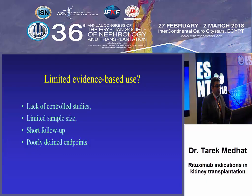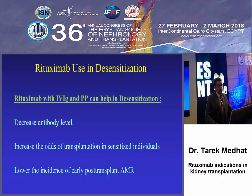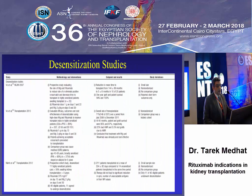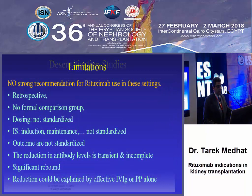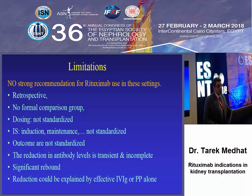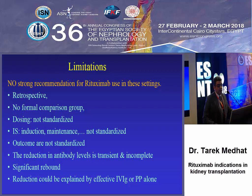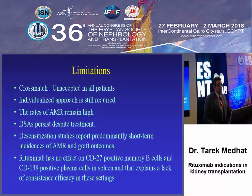Regarding desensitization, rituximab is used with IVIG and plasmapheresis to decrease antibody levels, with increased cost of transplantation in sensitized individuals and lower incidence of early rejection. However, the evidence still needs more study, as there are limitations including retrospective design, no formal comparison, non-standardized dosing, and non-standardized immunosuppression and outcomes. The antibody level drop is transient and incomplete with significant rebound. Also, crossmatch remains unacceptable in some patients, and the rate of decline of antibody-mediated rejection remains hard to determine. Additionally, rituximab has no effect on CD27-negative and CD138-positive plasma cells.